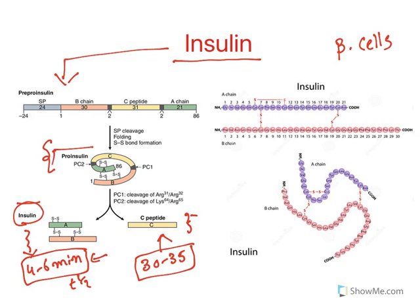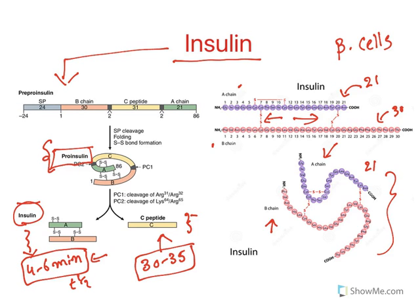Both insulin and C-peptide are released from pro-insulin in equimolar amounts. Insulin has two chains: A chain and B chain. The A chain has 21 amino acids, whereas the B chain has 30 amino acids. They are bound together with disulfide bonds. You can see the A chain and B chain — 21 amino acids and 30 amino acids — with two disulfide bonds.